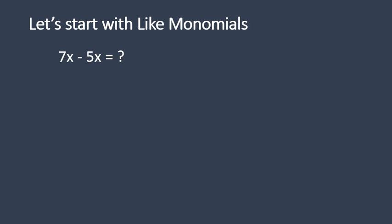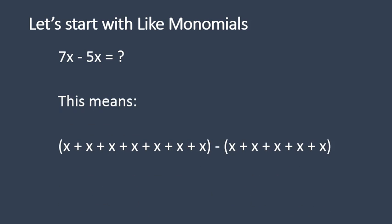Like terms are terms where the variable is exactly the same. 7x minus 5x means 7x's minus 5x's. I put those parentheses in there just to help us remember that we have 7 and we're taking away 5, to make it look a little bit more sensible and keep things together. But if you had 7 and you took away 5, you would be left with 2x's. That's what it looks like when you subtract like monomials.